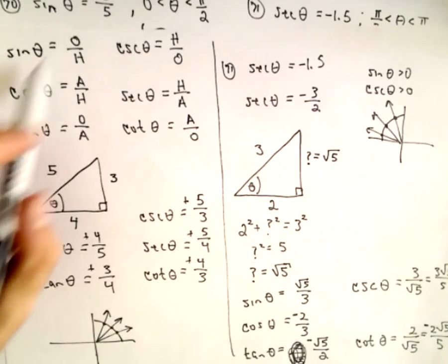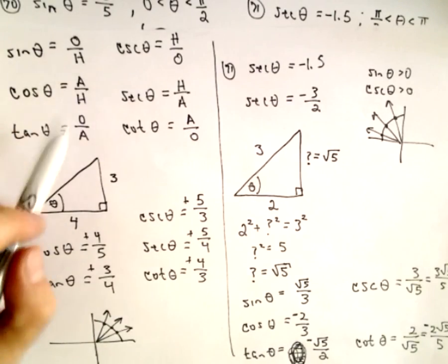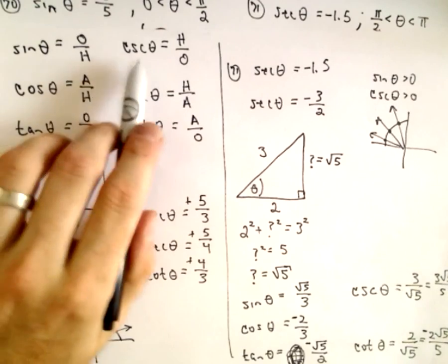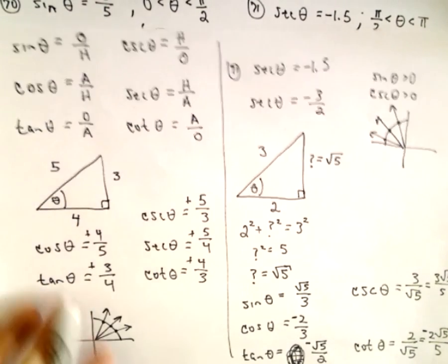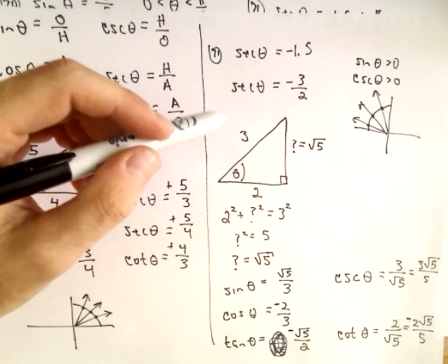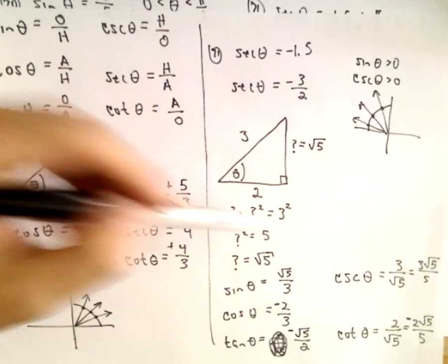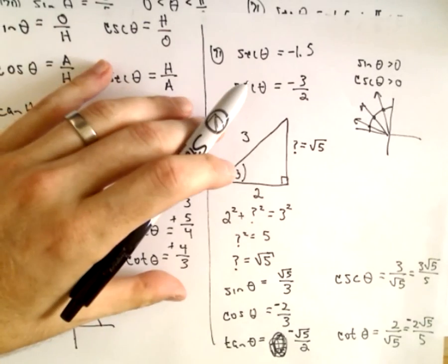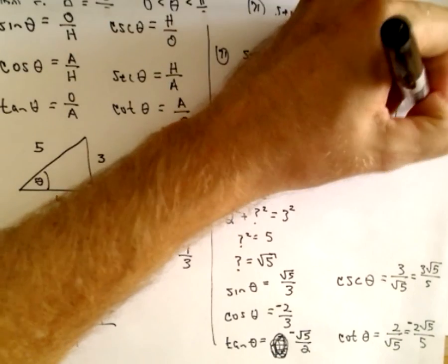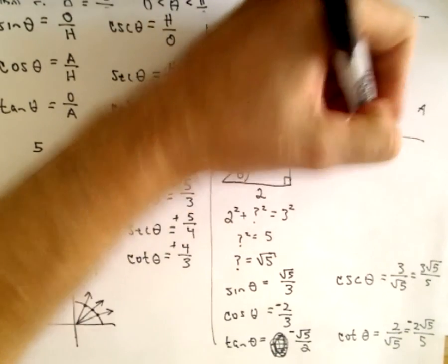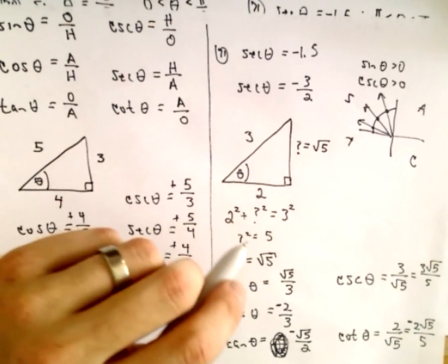Again, it's just a matter of remembering SOHCAHTOA or however you want to remember this mnemonic and the relationship between cosecant, secant, cotangent to sine, cosine, tangent. Just make a right triangle. Use Pythagorean theorem to figure out the missing side. And you can use, what is it, all students take calculus. That's one mnemonic to remember which ones are positive.